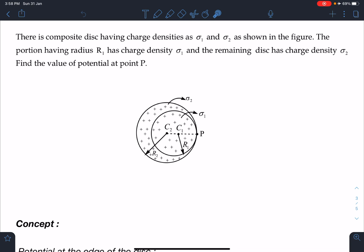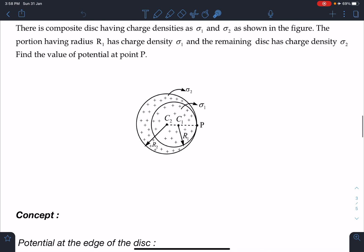The portion having radius r1 has charge density of sigma 1, and the portion having radius r2 has charge density of sigma 2. Find the value of potential at point P. Definitely, it is going to be a non-conducting disc—that's why such kind of arrangement is possible.